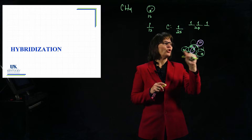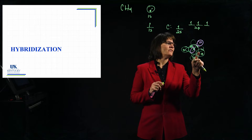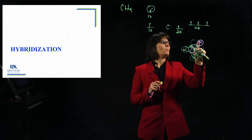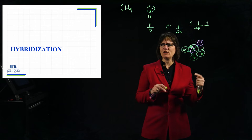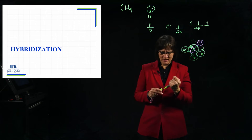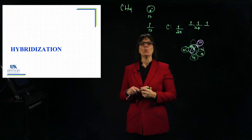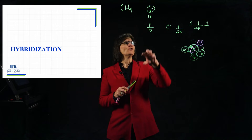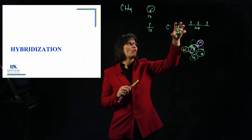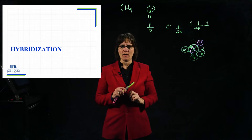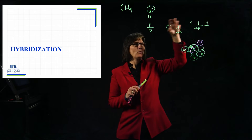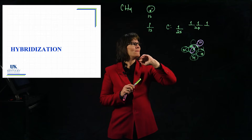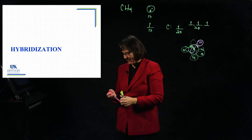This would give me two different types of bonds. There's an s and s overlap, there's a p and s overlap, and we'd see 90-degree bond angles. And that is not what happens with methane. There's got to be more to the story. So it's not just a 1s overlapping with a 2s and a 1s overlapping with a 2p - there's got to be more to the story.